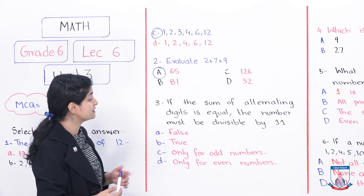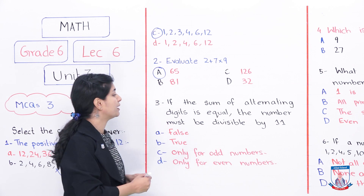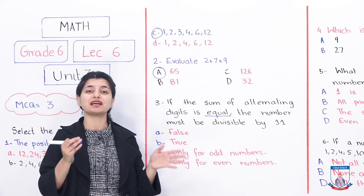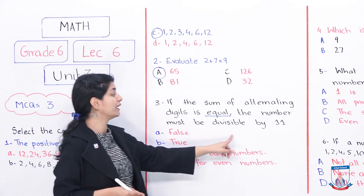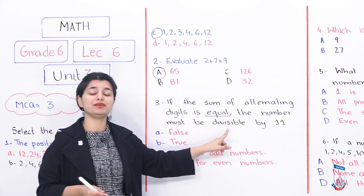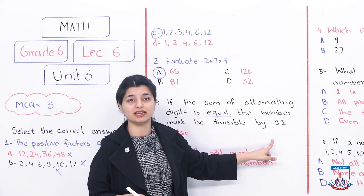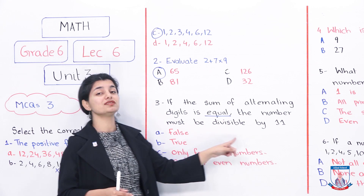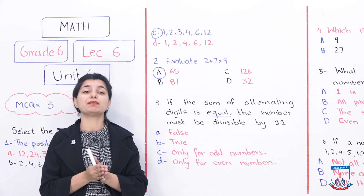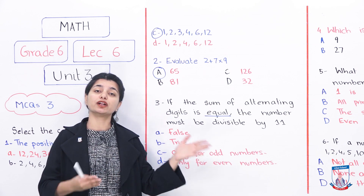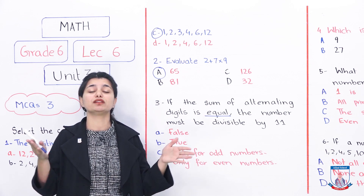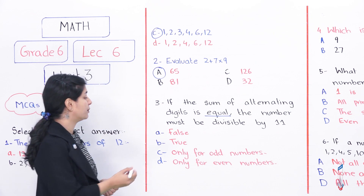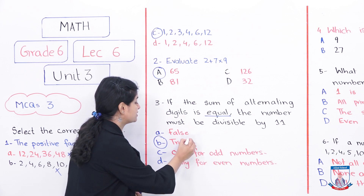The next question: if the sum of alternating digits is equal, the number must be divisible by 11. The rule of 11 is that you take the sum of alternating digits and find the difference. If the alternating digit sums are equal, that means when you subtract them the difference is 0. For example, if both sums are 7, then 7−7=0. When the difference is 0, the number is divisible by 11. So this statement is true.